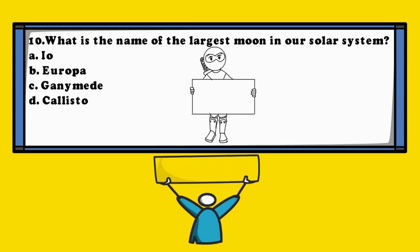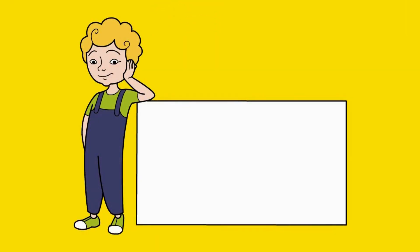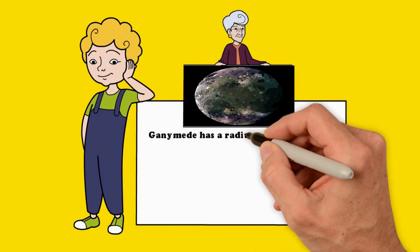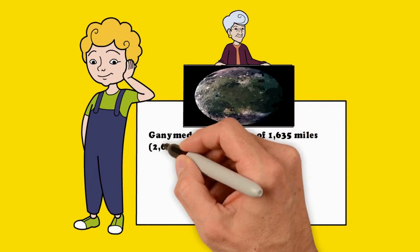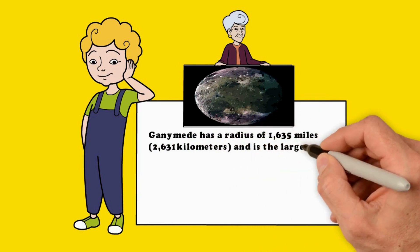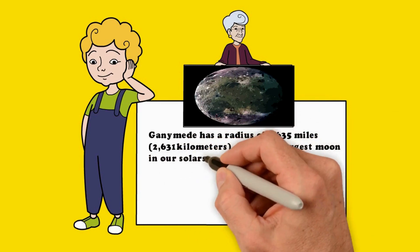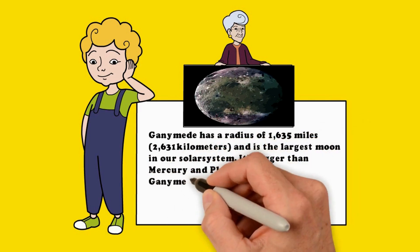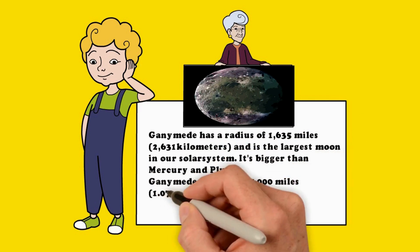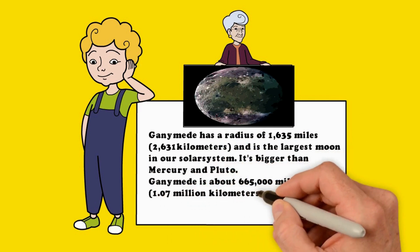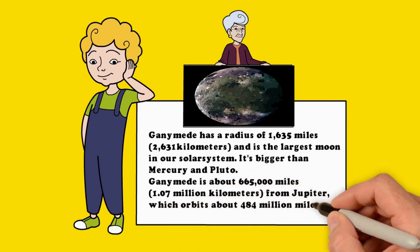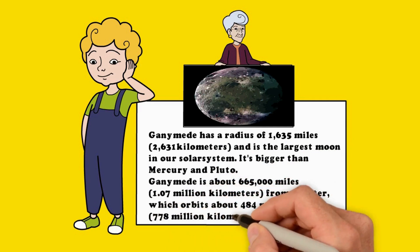The answer is C. Ganymede. Ganymede has a radius of 1,635 miles, 2,631 kilometers, and is the largest moon in our solar system. It's bigger than Mercury and Pluto. Ganymede is about 665,000 miles, 1.07 million kilometers, from Jupiter, which orbits about 484 million miles, 778 million kilometers, from the Sun.